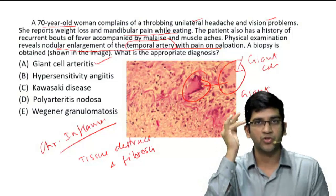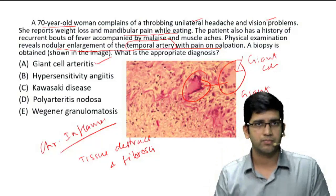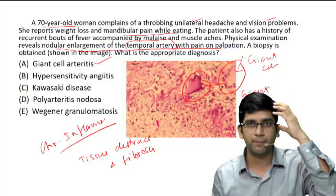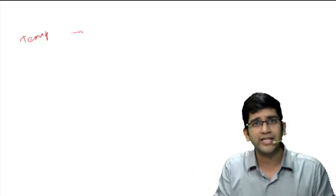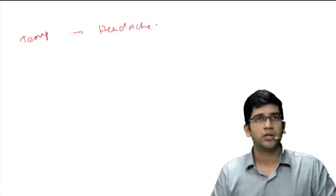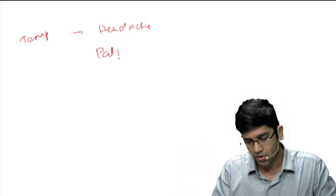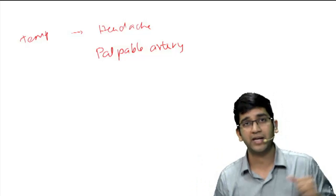When it heals by a fibrous response, the lumen of the temporal artery is definitely going to reduce. When the temporal artery lumen reduces, there will be less blood supply to the temporal region — we are going to have ischemic pain. That's given as a headache in the question. This is the only headache which will have palpable arteries — no other headache will have palpable arteries. That is also a very classical clue you have to pick up.